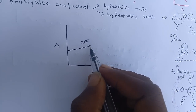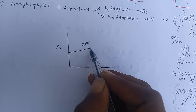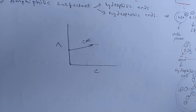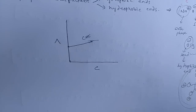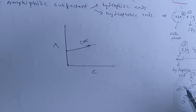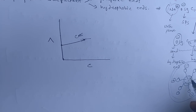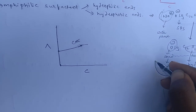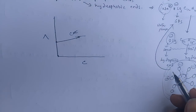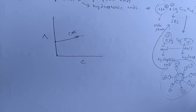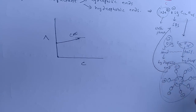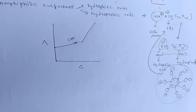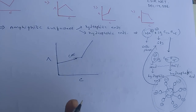After reaching the critical micelle concentration, the number of free anions in solution decreases, so the rate of increase in molar conductivity slows. However, with continued addition of SDS, bubbles form and disrupt the micelles — some micelles break apart into monomeric SDS anions. As a result, the molar conductivity of the solution suddenly increases rapidly.